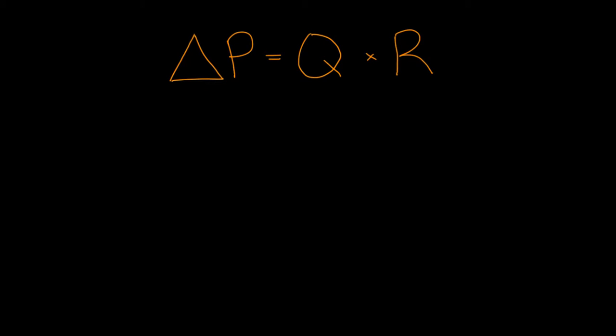We've been talking a lot about pressure volume loops, but we haven't talked about this formula, delta P equals Q times R, in quite some time. And you may be wondering, what is the relationship, if any, between the two? And so actually, there is a really nifty relationship between them, and I'm going to try to point it out to you.